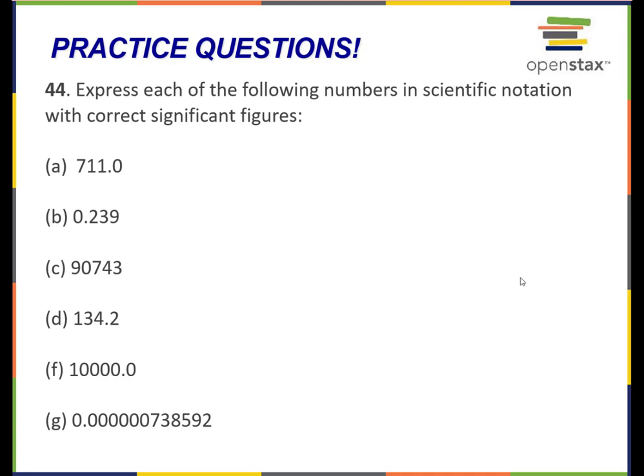Express each of the following numbers in scientific notation with correct significant figures. Scientific notation has two parts. A number in scientific notation is always represented as a number between 1 and 10. What that means is I always have to move the decimal point in between the first two non-zero numbers.